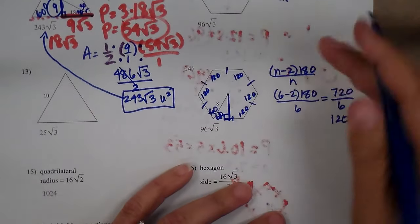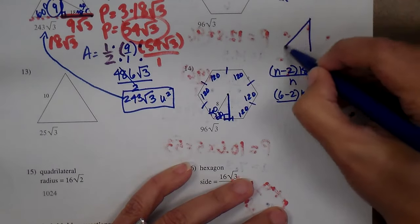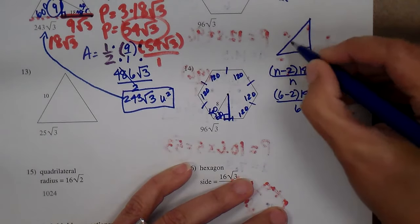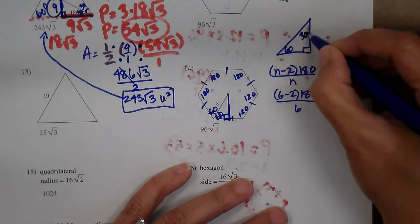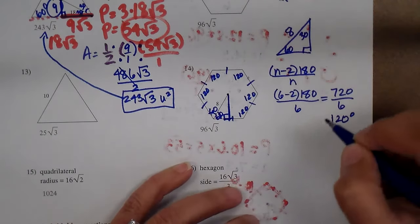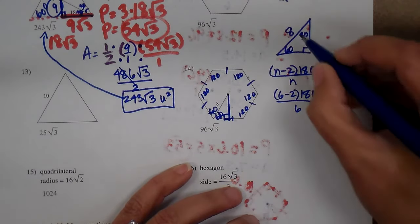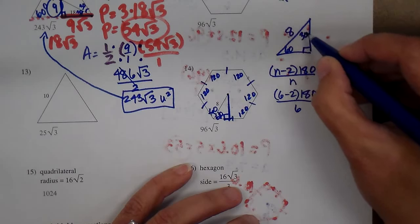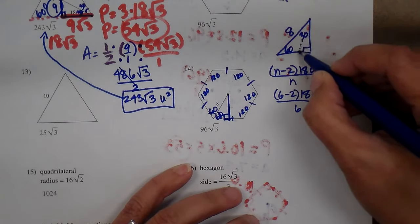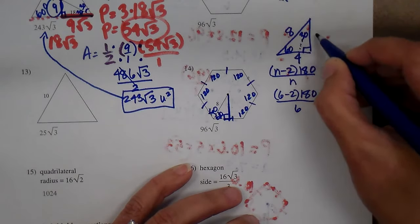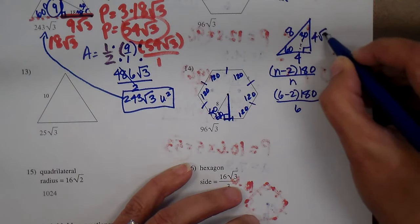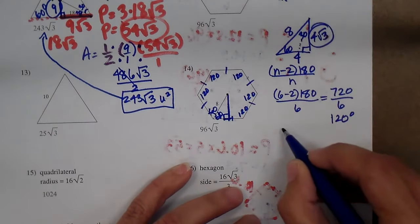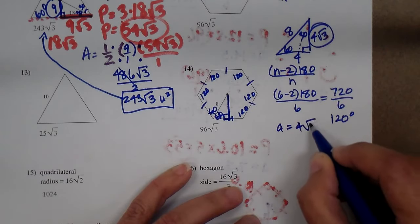I'm going to pull the 30, 60, and 90 out up here. Your 60 is here. Your 30 is here. You're given the 8, which is the hypotenuse. The hypotenuse is twice as big as the side across from the 30. So that would be 4. And the 60 is 4 square root of 3. So your apothem is 4 square root of 3.